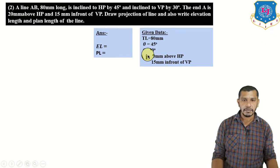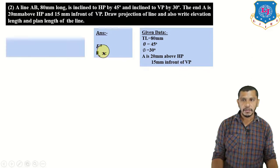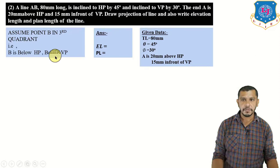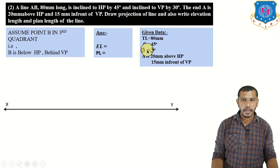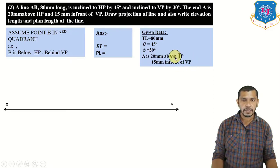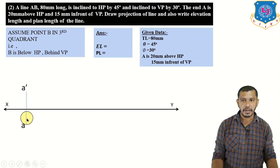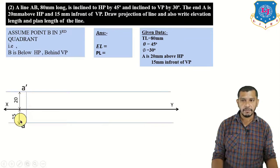The quadrant of point B is not given, so we assume point B in the third quadrant — meaning B is below HP and behind VP. Draw the XY reference line and mark point A: elevation a-dash is 20 mm above XY, and plan a is 15 mm below XY. This gives the locus of a-dash and locus of a.